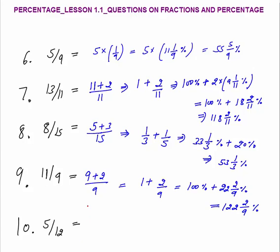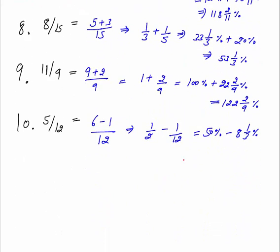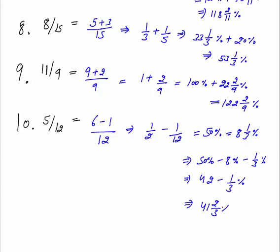5 by 12: we can say this is 6 minus 1 by 12. So 6/12 is half, minus 1/12. Half is 50%, and 1/12 is 8 and 1/3% as discussed in the previous lesson. Subtracting: 50% minus 8% minus 1/3% — because 8 and 1/3 means 8 plus 1/3, and both are negative — gives 42 minus 1/3%, leaving 41 and 2/3% as the final answer.